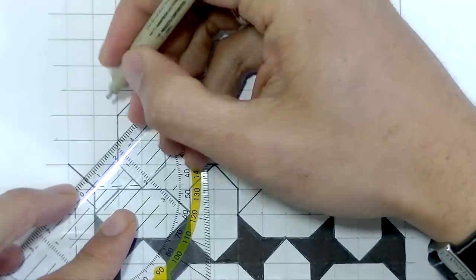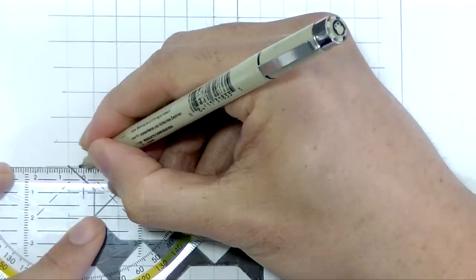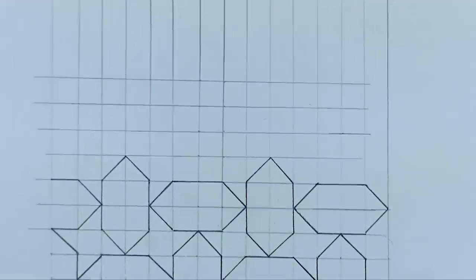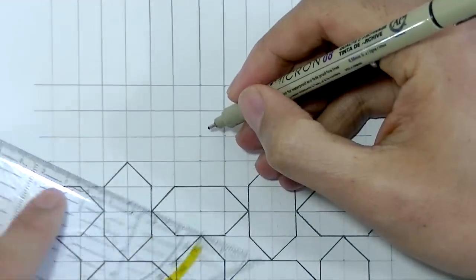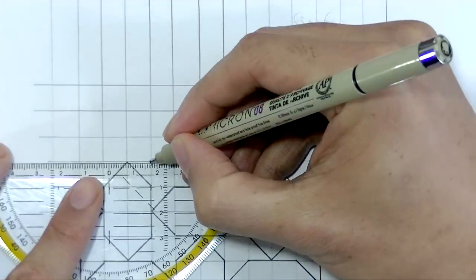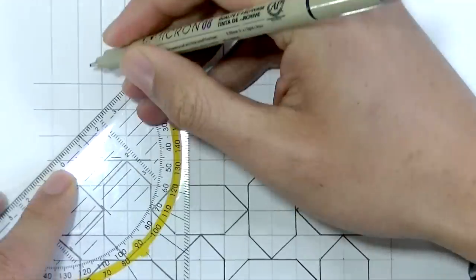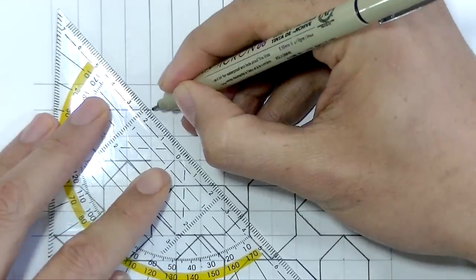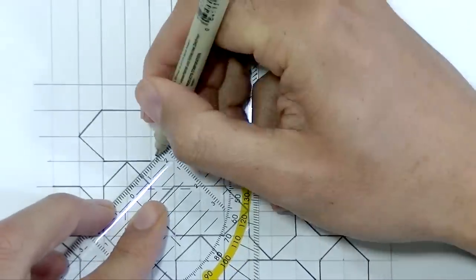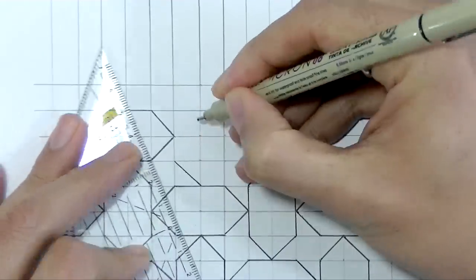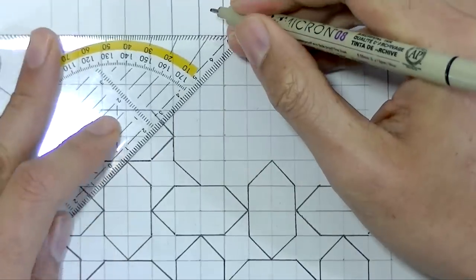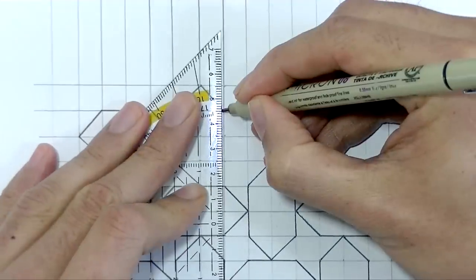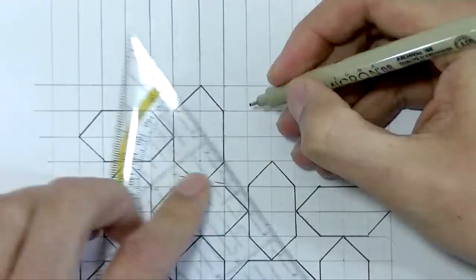I think that's an easier way to draw this pattern instead of focusing on the stars, which can be a little bit confusing. By just focusing on the hexagons it's a much more simple way to have a view on the pattern and where the lines should be going. So there are two ways to draw this pattern and both create the same pattern in the end, and this one is I think a little bit easier to draw.